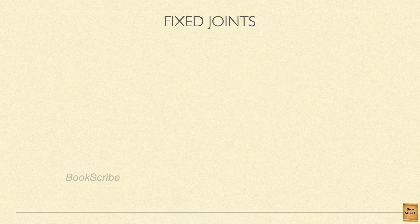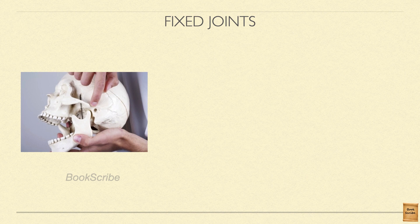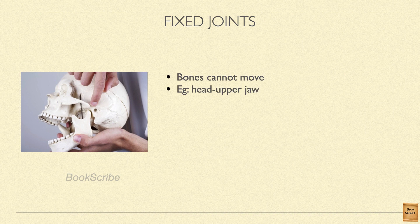Next we are going to see fixed joints. Until now, we have seen most bones can be moved in a joint. But in a fixed joint, the bones that are joined cannot be moved. For example, open your mouth wide — your lower jaw goes down, but your upper jaw is static; it won't move. Your upper jaw is attached to your head, and the place where your head and upper jaw are joined is a fixed joint. Fixed joints are permanently fixed and cannot be moved.